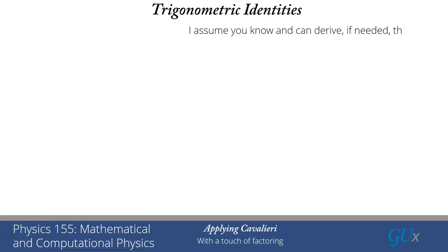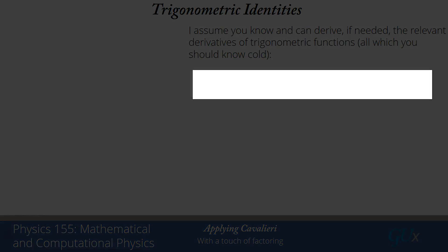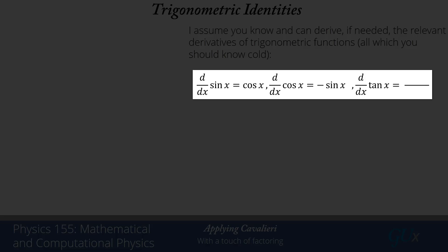I'm going to start by looking at some trigonometric identities. I'm going to assume that you know and can derive, if needed, the relevant derivatives of sine, cosine, and tangent. You really should know these cold. d/dx sin x = cos x, d/dx cos x = -sin x, and d/dx tan x = 1/cos²x, or sec²x.